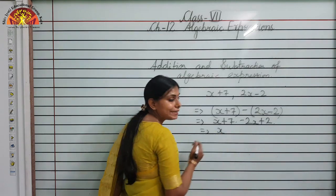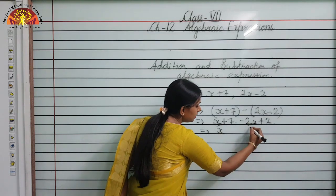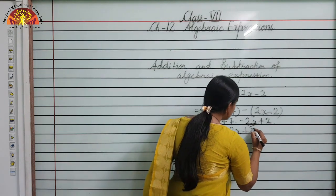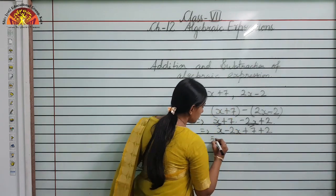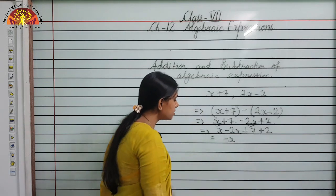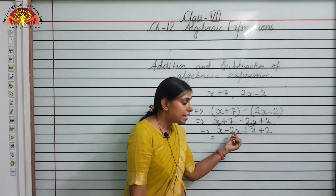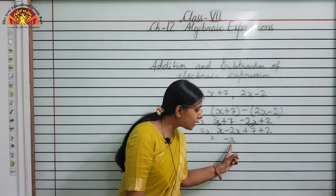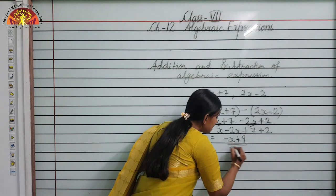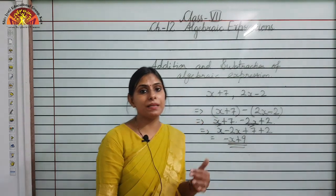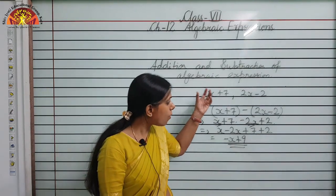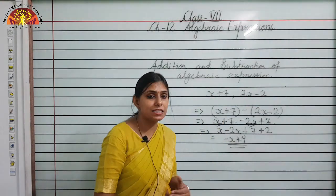Collecting like terms after sign change: x and −2x give −x (since 2 is greater and its sign is minus), and 7 plus 2 is 9. So the answer is −x plus 9. This is how you perform subtraction of algebraic expressions.